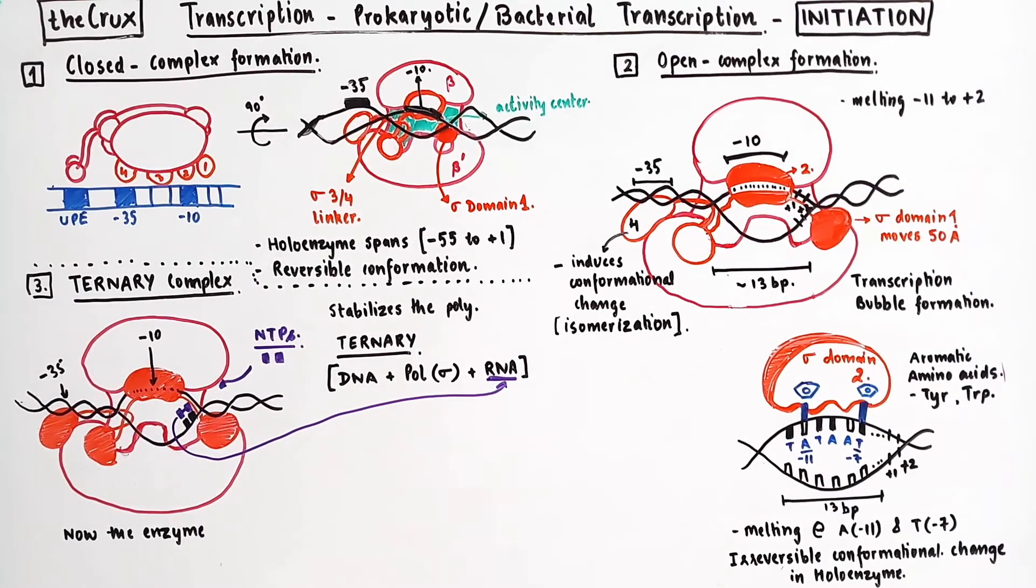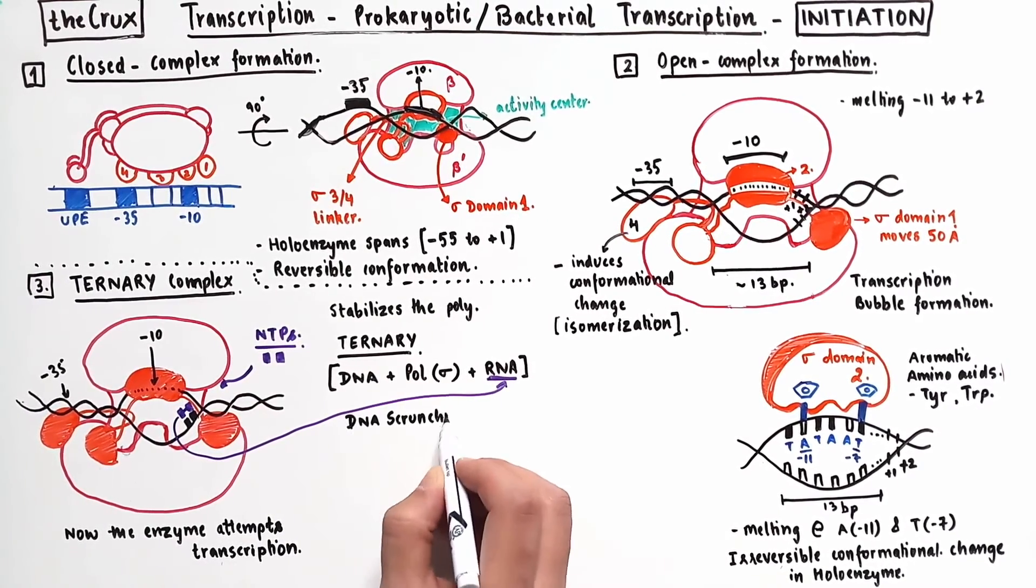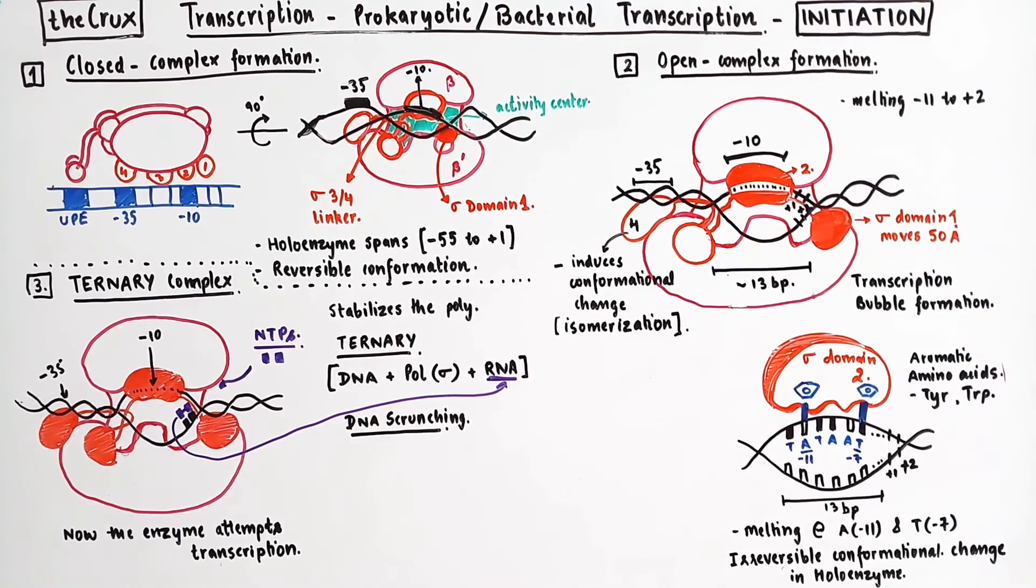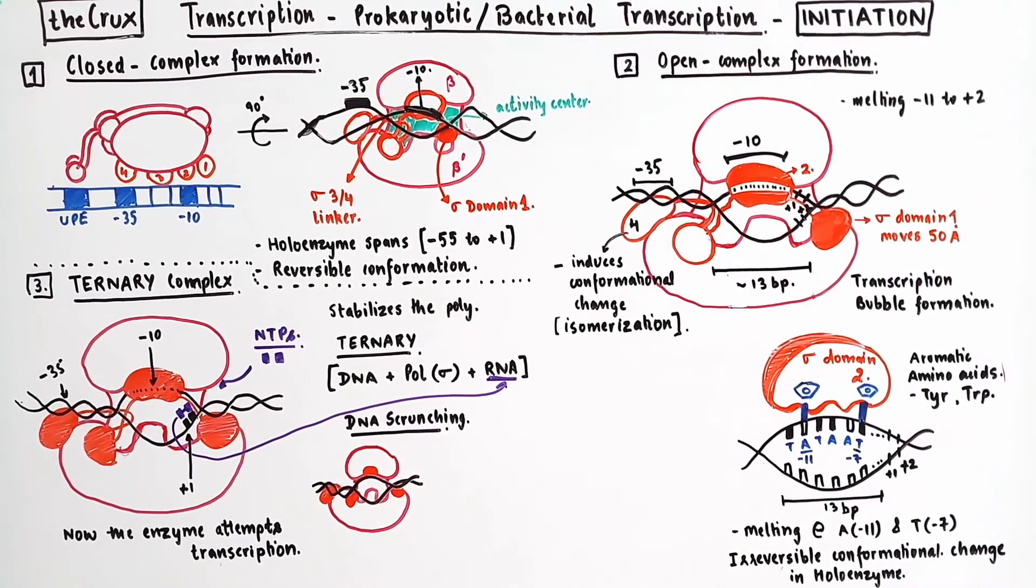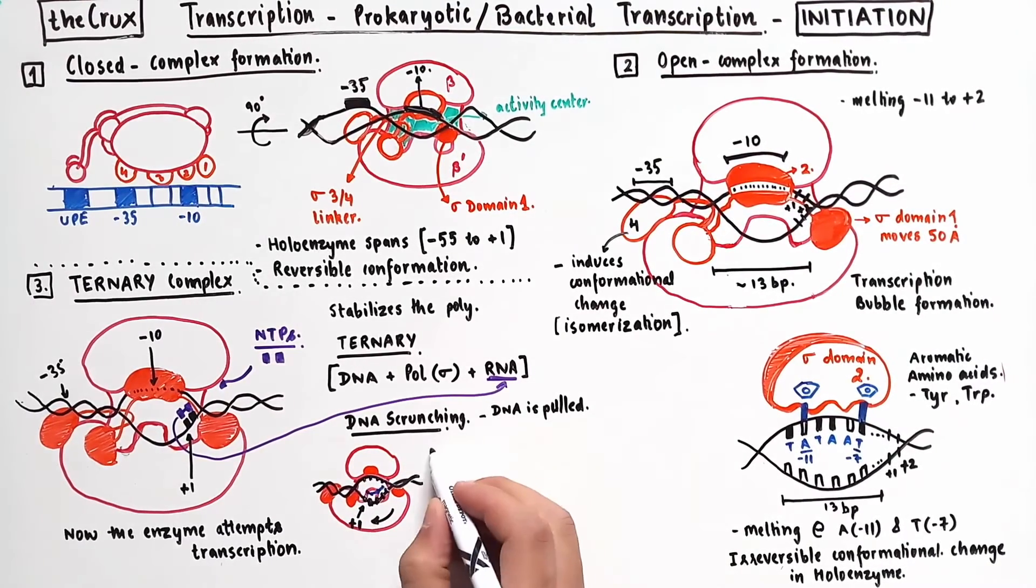Now the enzyme attempts to transcribe beyond plus 2 site. This initial attempt is performed by the process known as DNA scrunching. In the complex here, the plus 1 is at the edge of the bubble. But in DNA scrunching, the template is pulled into the holoenzyme such that the plus 1 moves inwards. In this process, the holoenzyme synthesizes short RNAs, and then sometimes it fails to move forward.